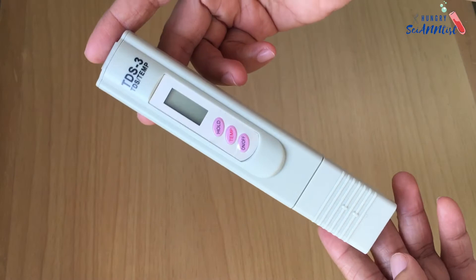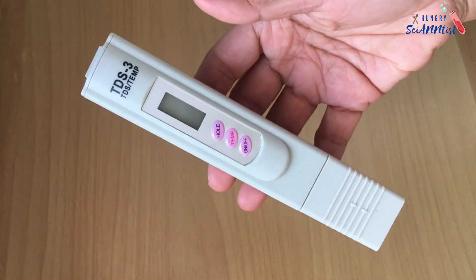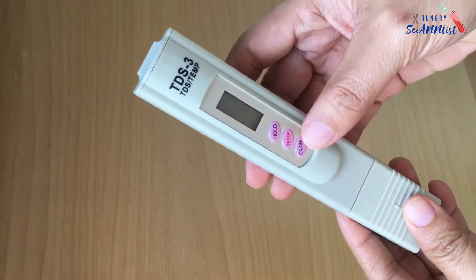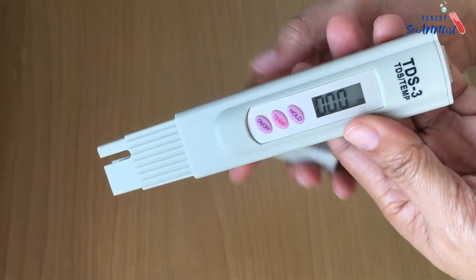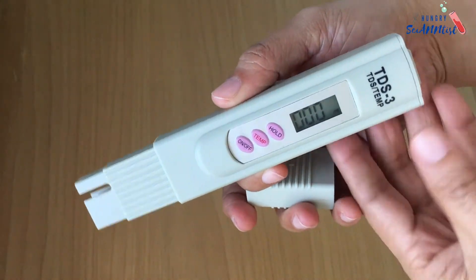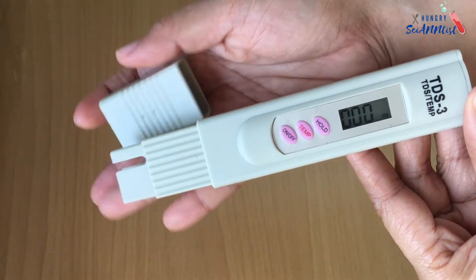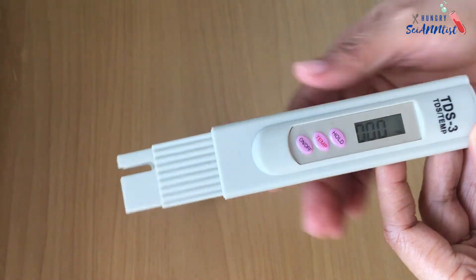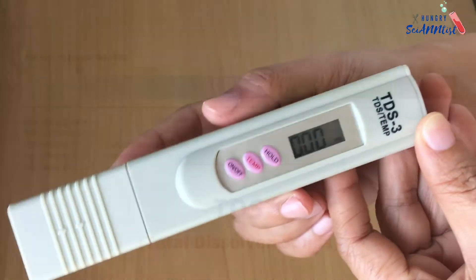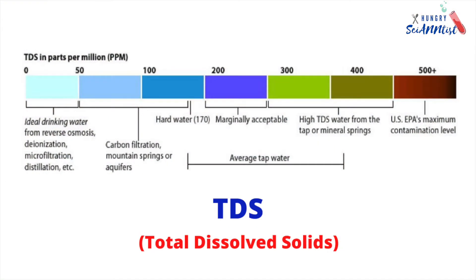What is TDS? TDS are organic and non-organic sediments found in water, which contribute to a difference in the taste, odor, and appearance of water. The very common inorganic substances that are found in water are magnesium, calcium, and potassium.